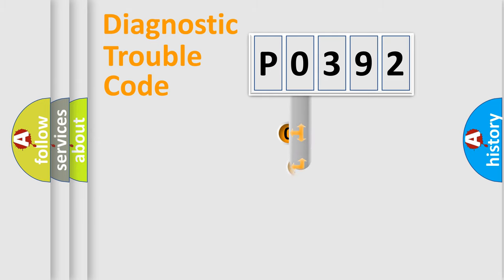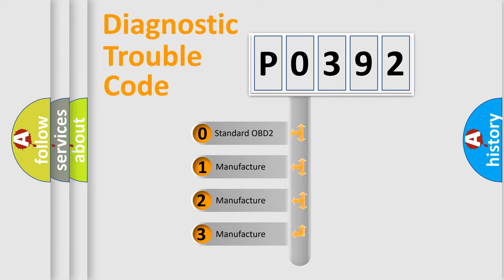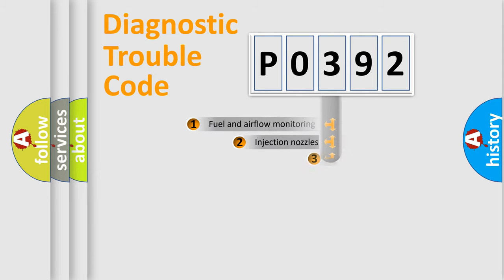This distribution is defined in the first character code. If the second character is expressed as zero, it is a standardized error. In the case of numbers 1, 2, 3, it is a manufacturer-specific error.